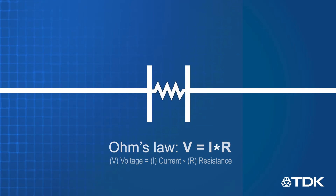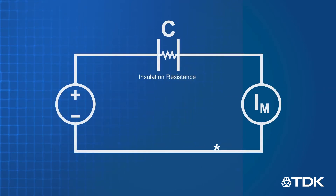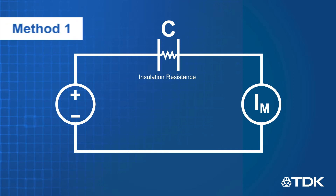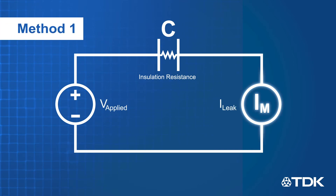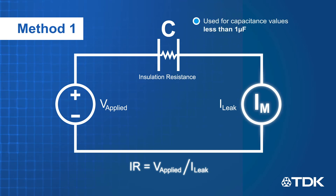There are two basic ways to measure the leakage current. The first is to apply an ammeter in series with the capacitor and a voltage source. This method is usually applied to capacitors less than 1 microfarad, as low capacitance capacitors have low leakage current, and a low current ammeter can measure the current accurately.